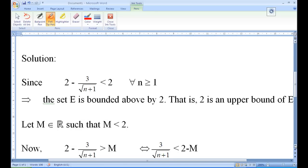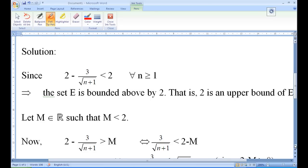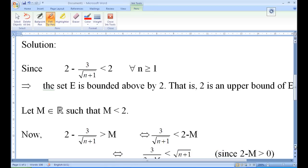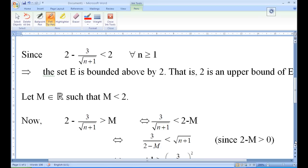Take any number, say 2 minus 3 over square root of n plus 1. Now, if I have 2 minus 3 over square root of n plus 1 greater than M, this is equivalent to 3 over square root of n plus 1 less than 2 minus M. And 2 minus M is greater than 0.